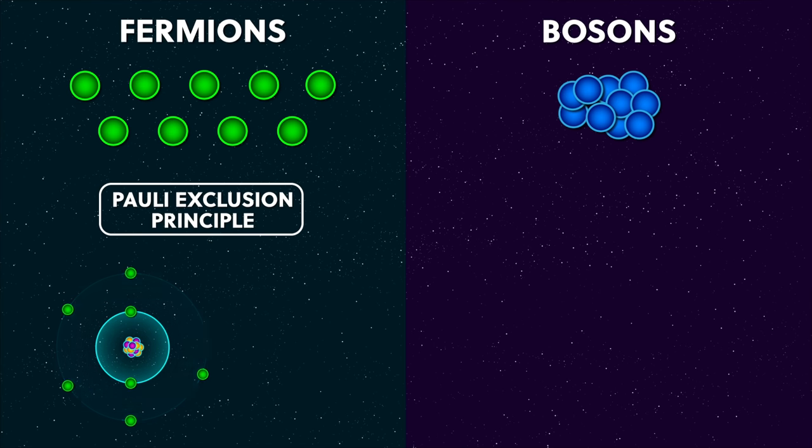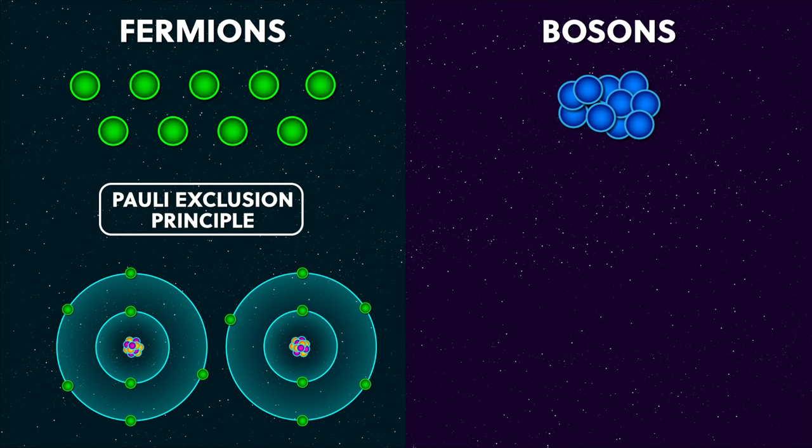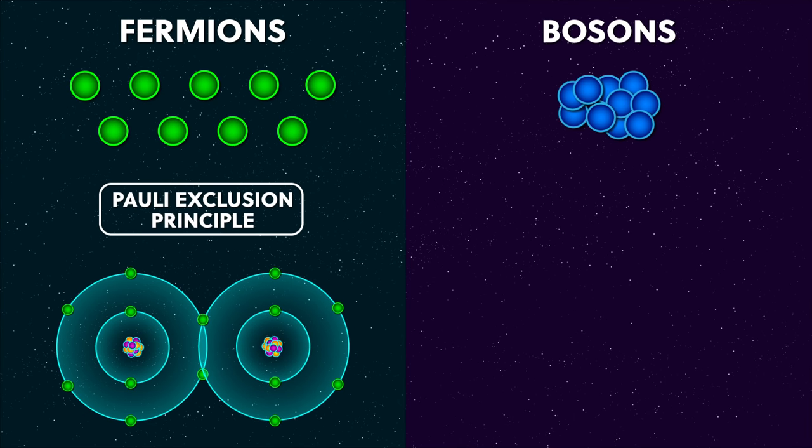The Pauli exclusion principle is what makes the electrons in atoms populate all of the energy shells. If it didn't exist, they'd all collapse into the lowest energy state, and atoms would behave very differently, because it's the outer electrons in each of the elements that sets the kind of chemical bonds those atoms can make. And chemistry creates all of the complexity in the universe. So without the Pauli exclusion principle, every atom in the periodic table would behave almost identically to hydrogen, and none of the complexity that makes up chemistry and biology, including us, would exist, because nothing would be solid. When we sit on a chair, it's essentially the Pauli exclusion principle that's stopping us from just falling through.